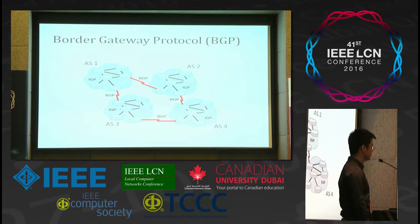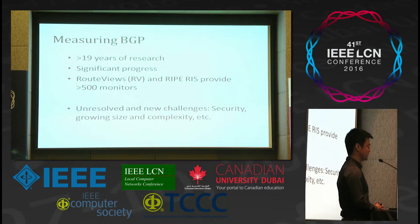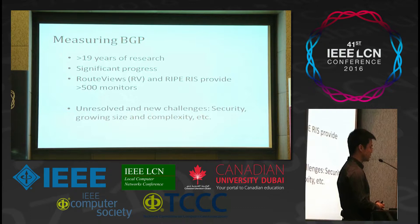BGP is the border gateway protocol, and it is an interdomain routing protocol that connects tens of thousands of autonomous systems on the internet. The measurement of BGP started about 19 years ago, and there has been significant progress in this field. Internet organizations such as RouteViews and RIPE RIS provide more than 500 monitors in the world to facilitate BGP measurement work. However, there are still unresolved and new challenges in the field of BGP measurement, such as security issues, the growing size and complexity of BGP.